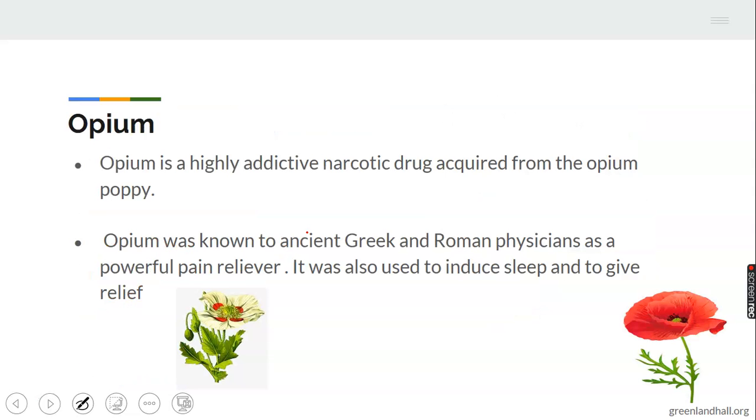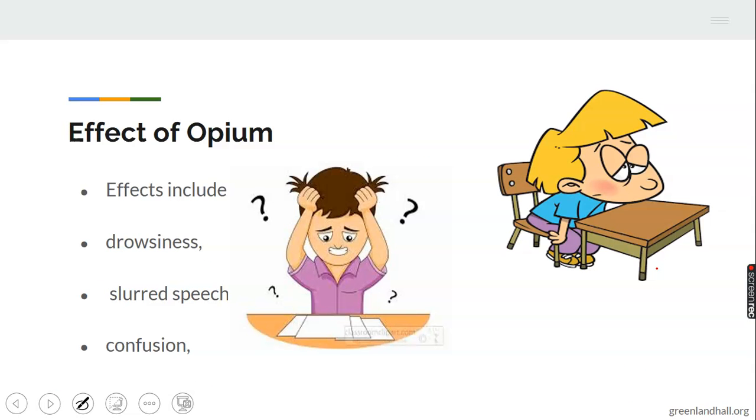Opium is a highly addictive narcotic drug acquired from opium poppy. This is opium poppy, the plant here. Opium was known to ancient Greek and Roman physicians as a powerful pain reliever. It was also used to induce sleep and to give relief. Sometimes they use this to induce sleep and to give relief when people are feeling weak, they want to sleep, they don't want to feel pain, so they take these drugs. But there is no excuse for using these kinds of drugs.